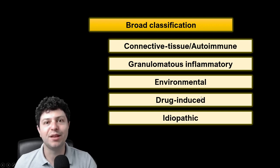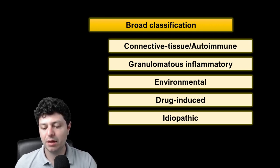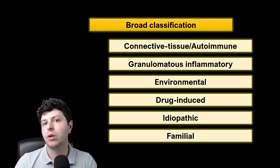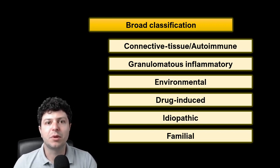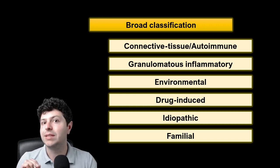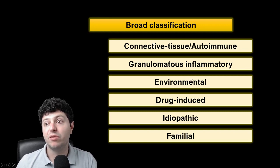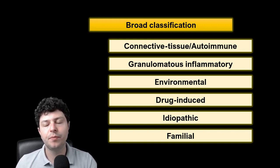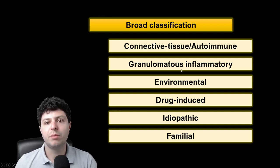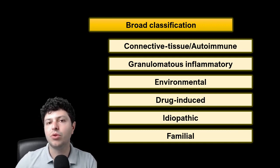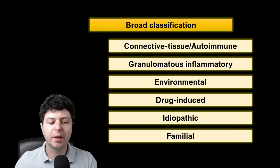And I would add something more recently acknowledged: familial interstitial lung diseases, which are conditions in which there is a strong familial predisposition. Not everyone in the family gets the same ILD — they can have different ILDs or even related conditions such as myelodysplasia, but there is a familial aggregation. It's important because the prognosis can be different, so it emerges as an entity in itself.